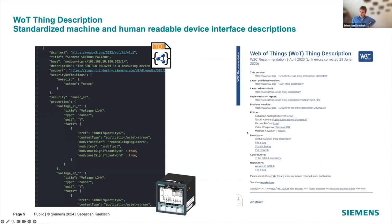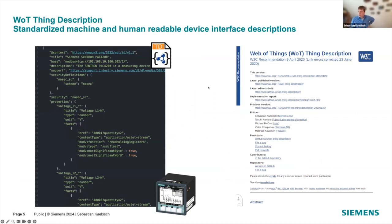To understand what the Thing Description does for a device, I'll use a nice example. I like to compare the Thing Description to a landing page, similar to a web page's index.html — the first thing you encounter. The Thing Description gives you a basic understanding of what the interface offers: what protocol is used, what kind of data is provided, and what settings you need to communicate with the device.